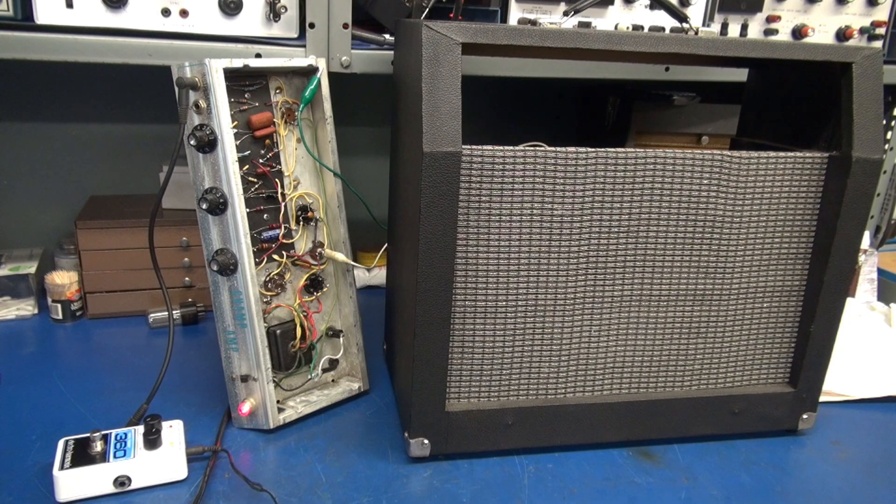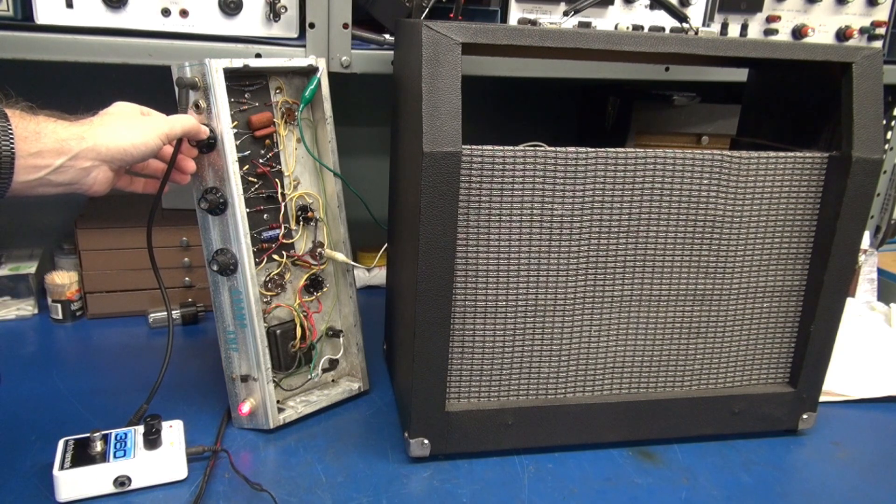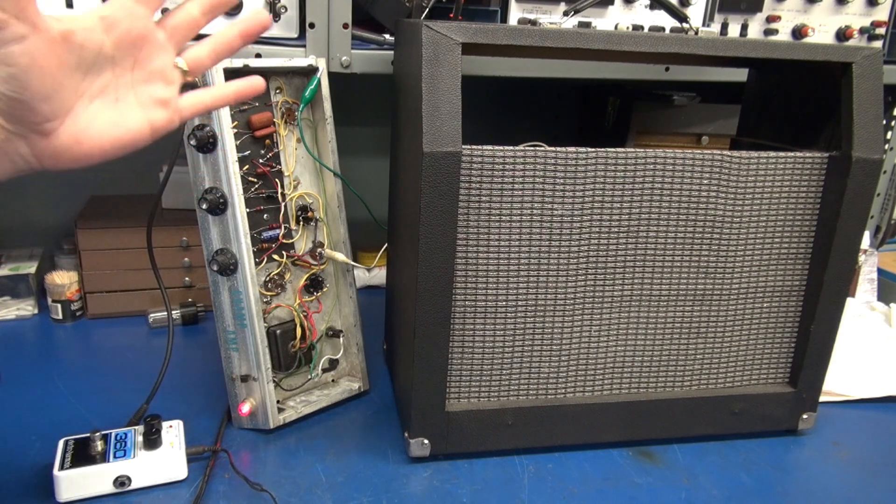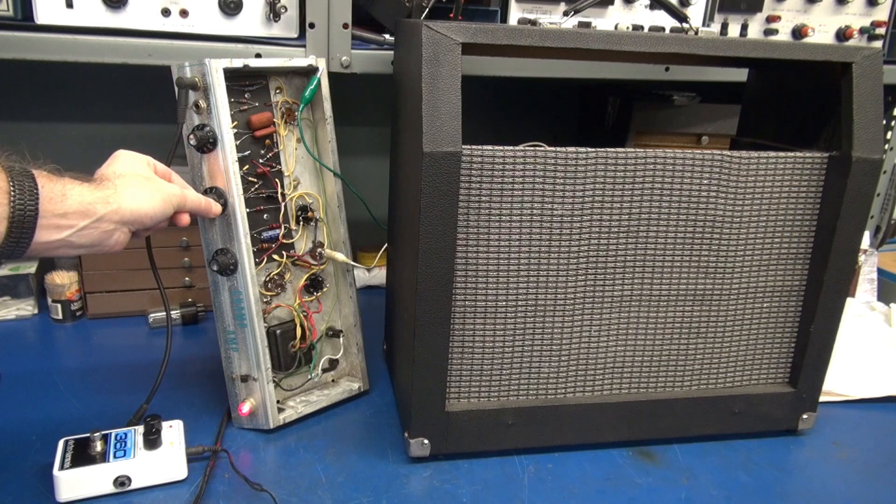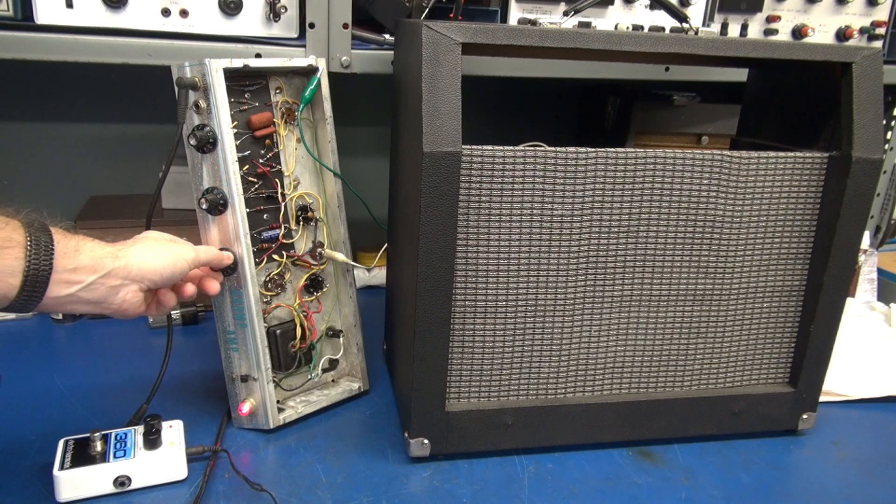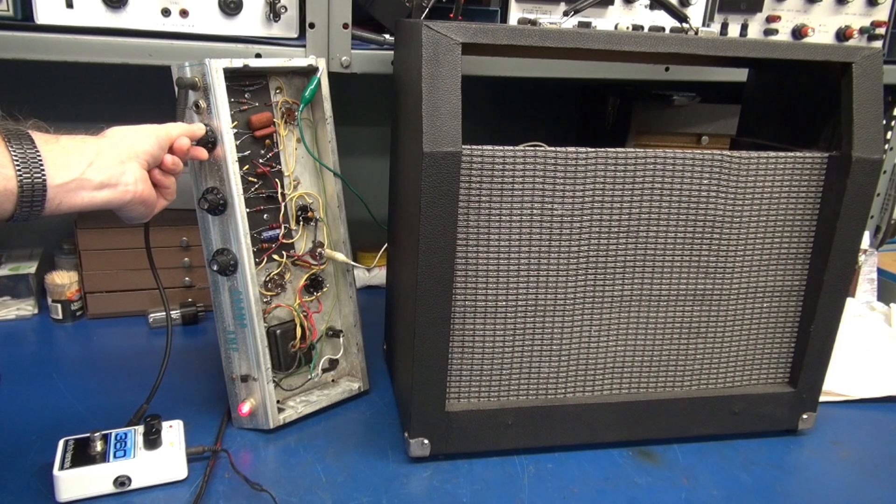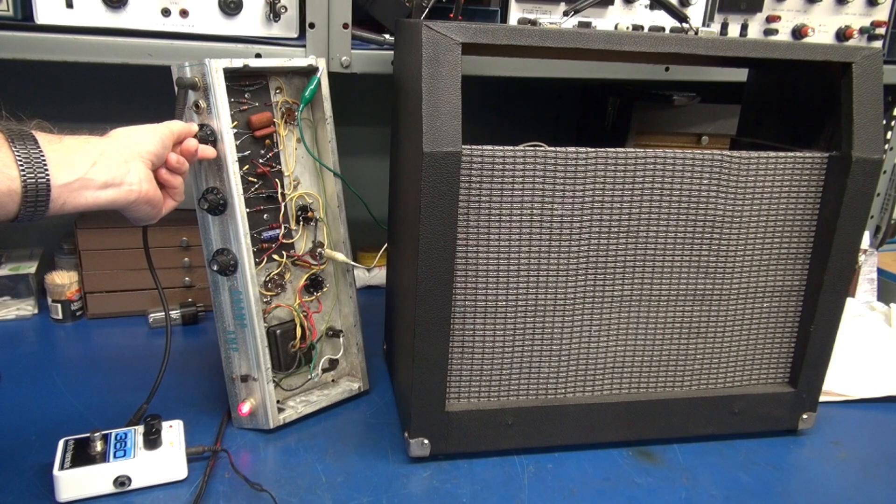Here's a test of the Champ using a looper. Let's bring up the volume. We'll crank it up till it distorts.